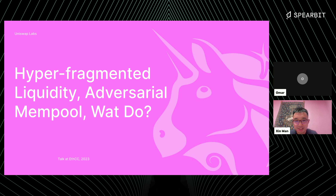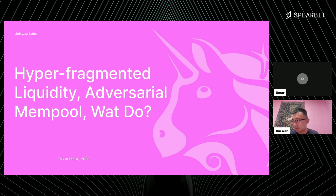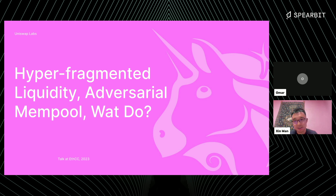This talk is recycled from ECC, so if you've seen that one it's going to be almost the same. Within this year, Uniswap Labs launched two new protocols: one is called Uniswap V4 and the other is called Uniswap X. They're somewhat related and they both have the same kind of ethos. Let's start by motivating the problem we're trying to solve here.